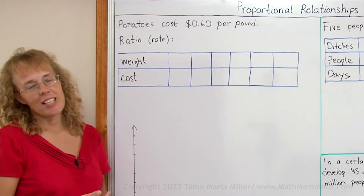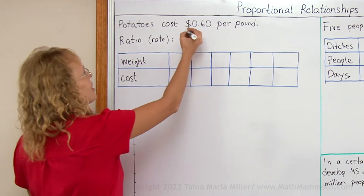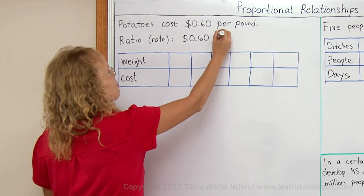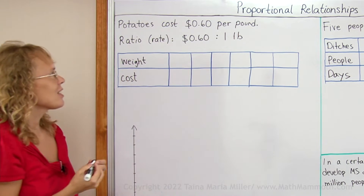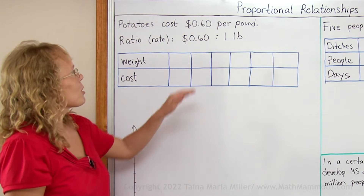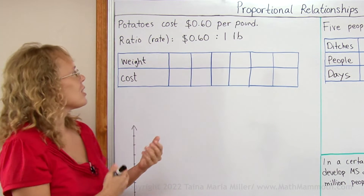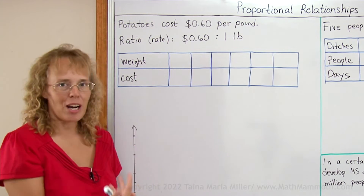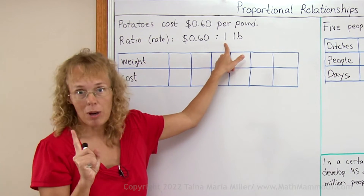In my first example, we have potatoes that cost 60 cents per pound — $0.60 to 1 pound. This is my rate or ratio. It is both a ratio and a rate. It is a ratio because we are comparing two numbers. It is a rate because these numbers have different units: dollars and pounds. And it also happens to be a unit rate because this number here is 1.